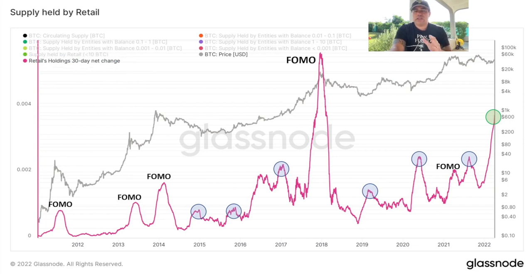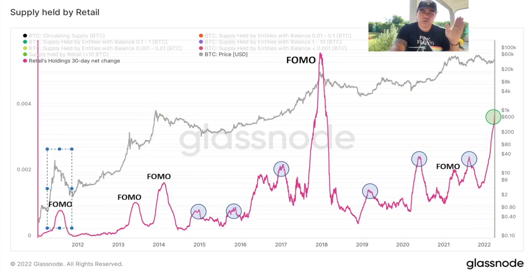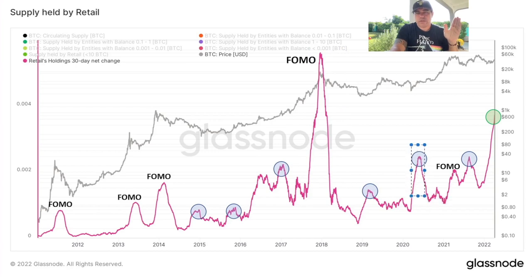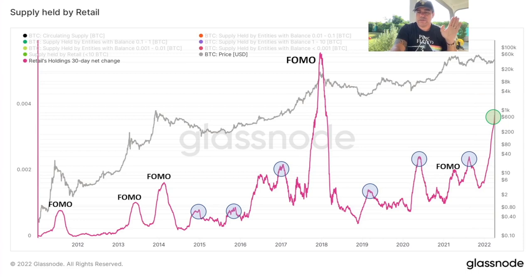This next chart shows even more: it's not only the big wallets accumulating Bitcoin — now retail is starting to accumulate too. The short-term buyers are even peaking, which is very unusual, because normally they only peak during blow-off tops. This is strange — retail accumulating now could be a sign we are going to create that blow-off top. Very strange, but the charts are showing it.